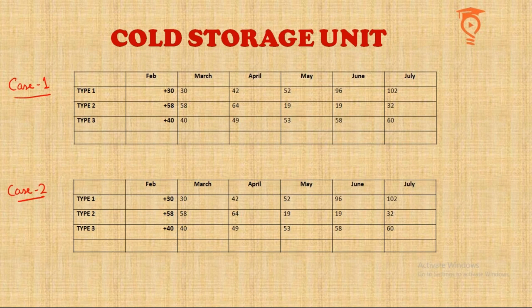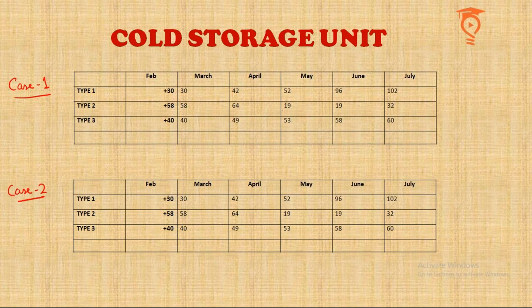Type 1 numbers always appear to be increasing: 30, 42, 52, 96. Type 3 also increases: 40, 49, 53, 58, 60. But Type 2 decreases exactly after two months — at the beginning of March it was 58, April it increased, May it decreased. A decrease exactly after two months means those cauliflowers perished, so Type 2 must be the low quality type.